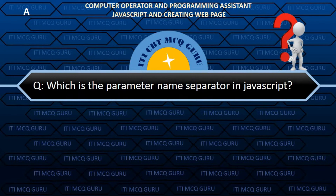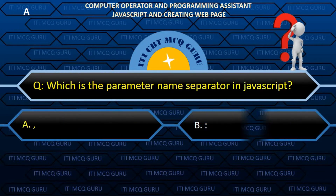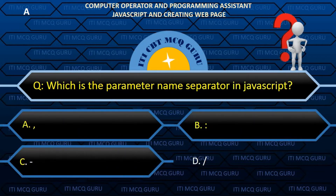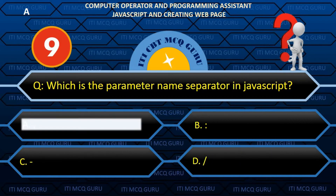Which is the parameter named separator in JavaScript? A. Comma.